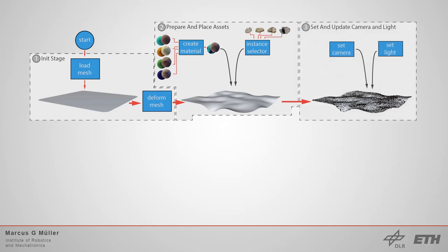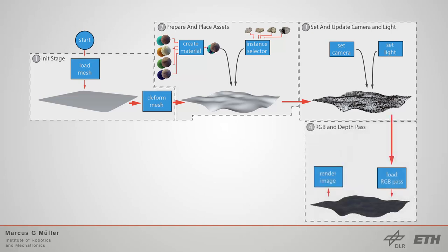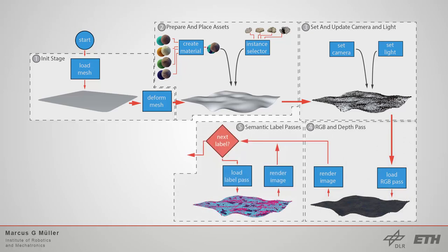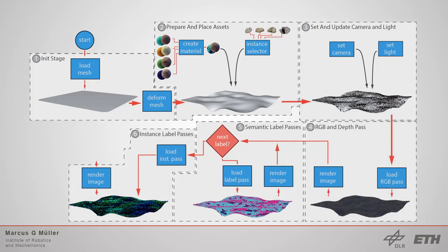After that, the light setup is created and the sensors are placed in the scene. Once the entire scene is ready, the different render passes are rendered for all sensors depending on your config file. In the default setup, this includes RGB and depth, multiple semantic segmentations and instance segmentation.